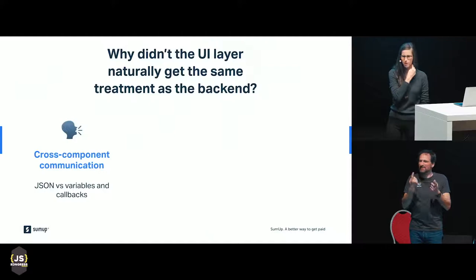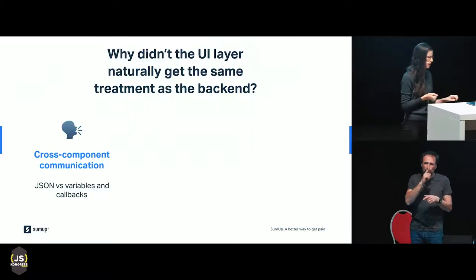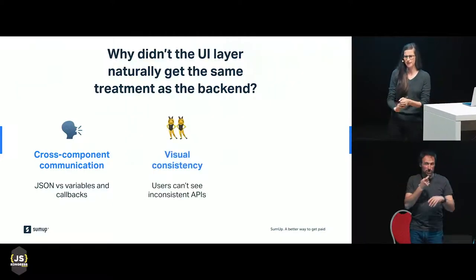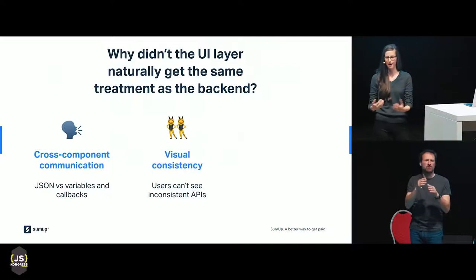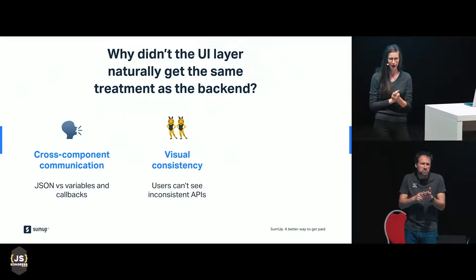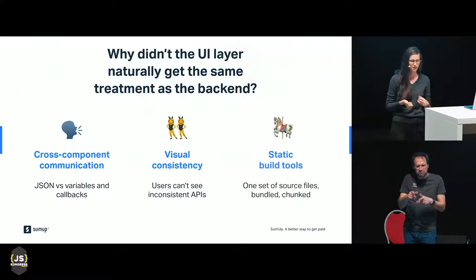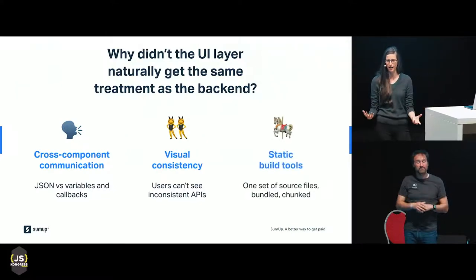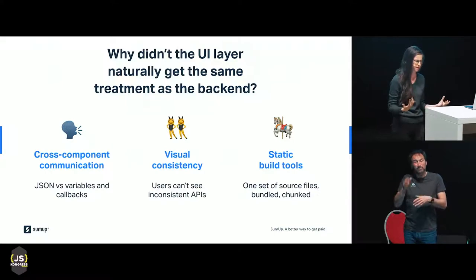The first reason is that cross-component communication is a bit different. We have different frameworks, and we're not just talking with data but with more complex objects. We also know that visual consistency is super important. You might see an API with documentation made by a back-end team — it's in a microservice and it doesn't really matter if it's inconsistent, because the user is never going to see that inconsistent API. And finally, most of our build tools assume that everything needed to build and run the app is going to be available at build time, which is not how we want to build distributed systems.